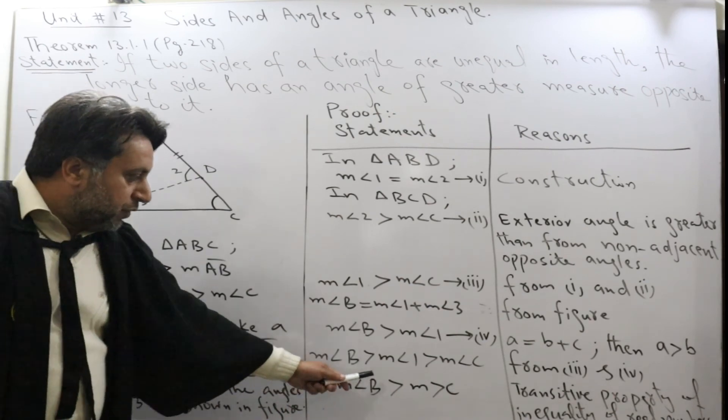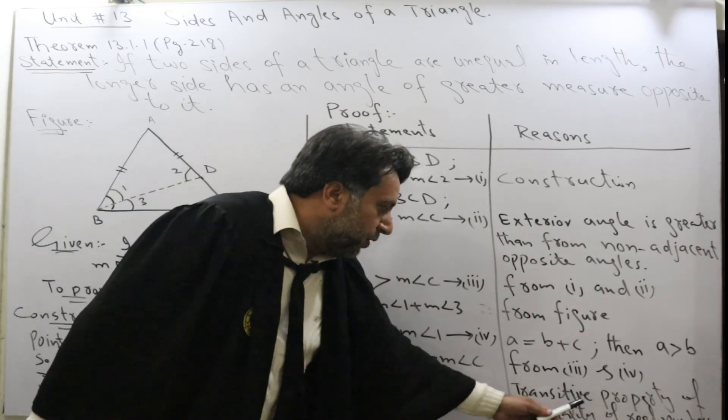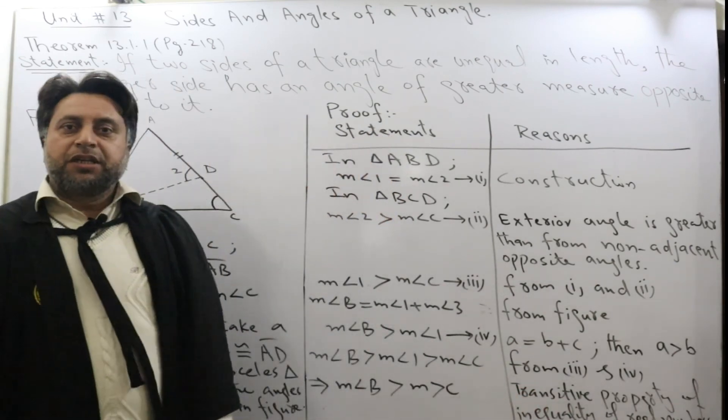B is greater than angle C. It means the transitive property of inequality of real numbers, hence proved.